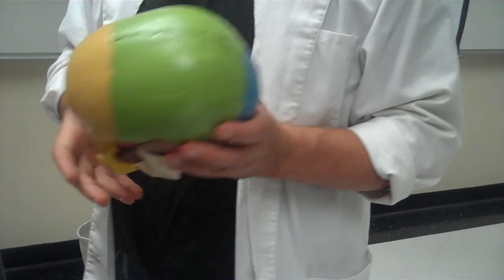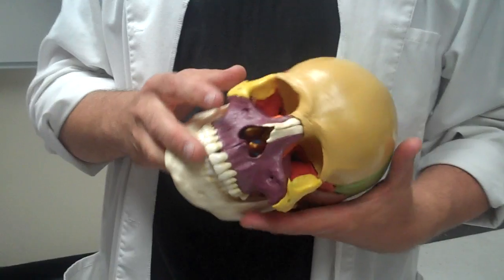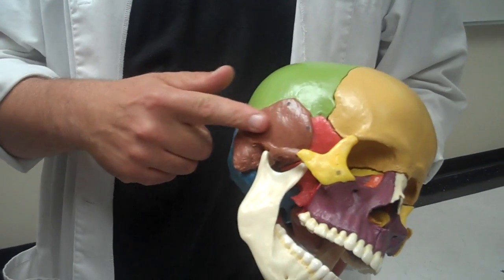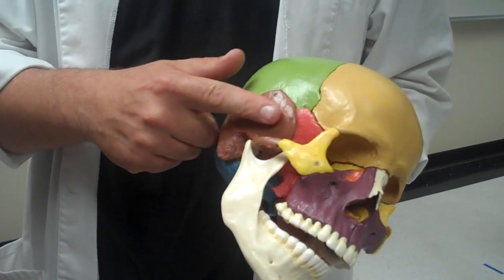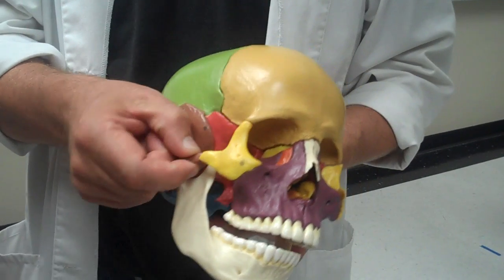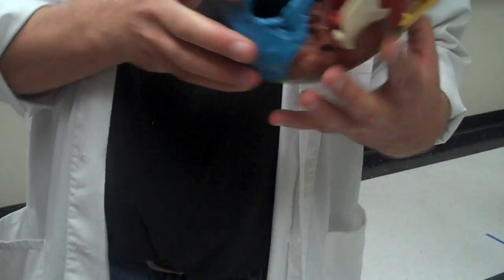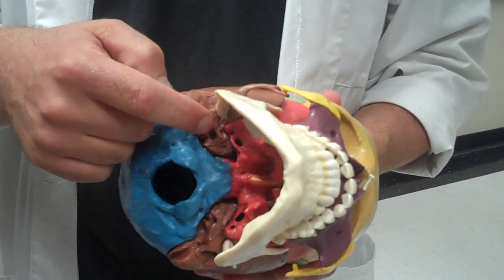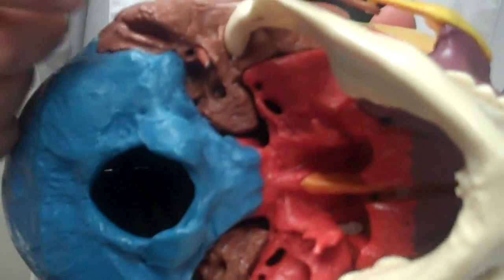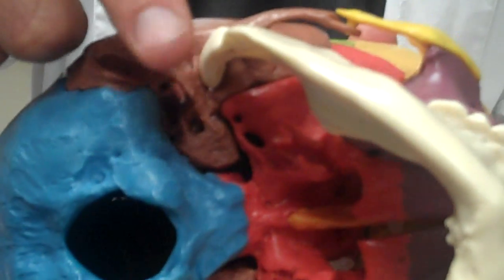Okay, then we have temporal bones. Temples. First part of it is the zygomatic process. We have the styloid process. Notice the styloid process looks like a little pen, a little pencil hanging down.